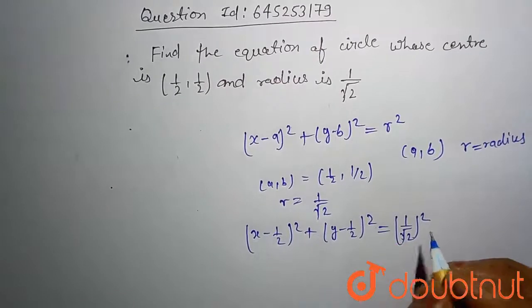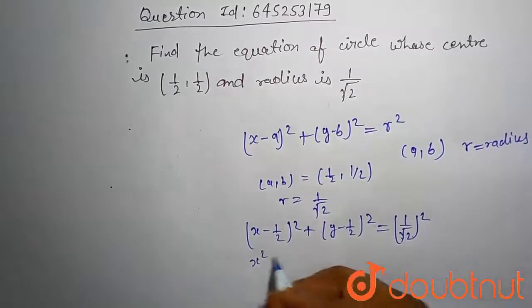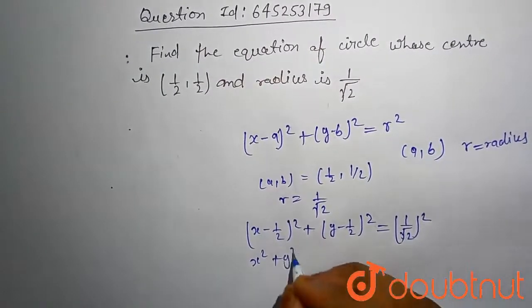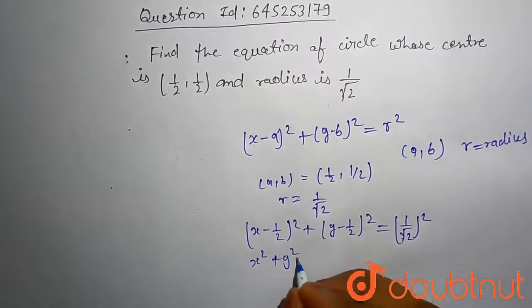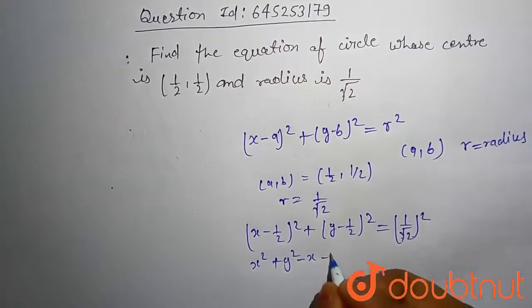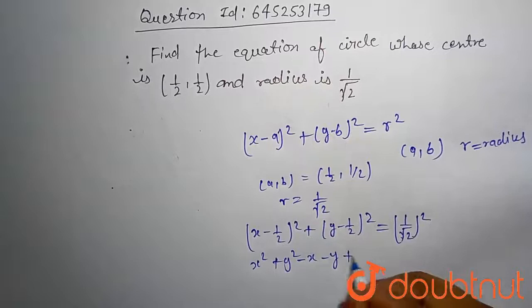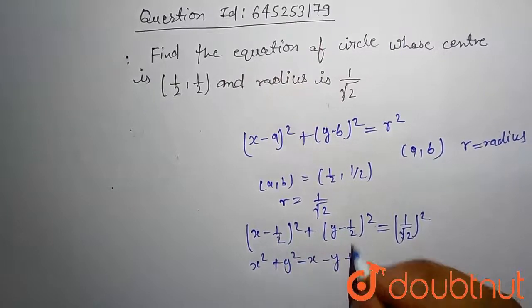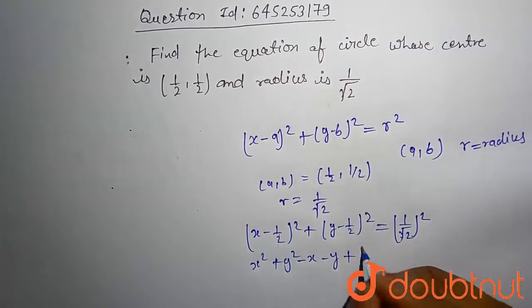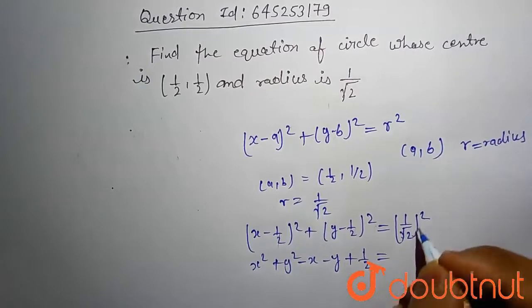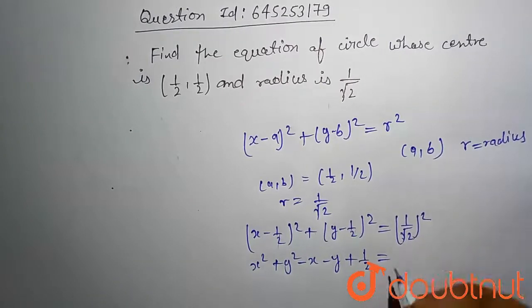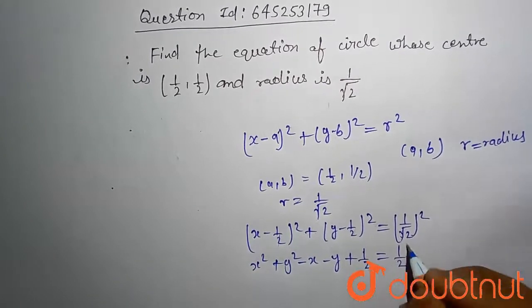If you expand this, this comes out x square plus y square minus x minus y plus here 1 by 4, 1 by 4, which comes out 1 by 2, equal to this is also comes out 1 by 2. Here 1 by 2 cancel out.